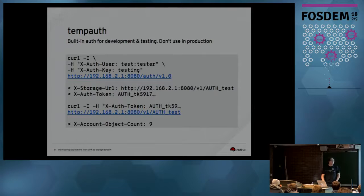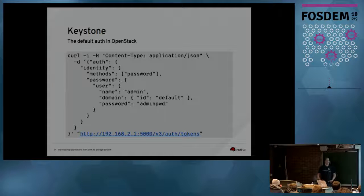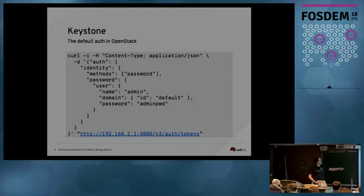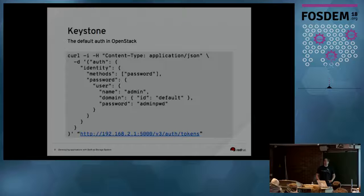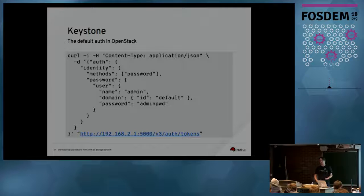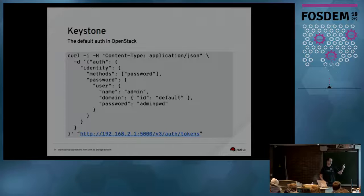When going into a production-like environment, in many cases you're using Keystone, which is the OpenStack identity project. It works similarly — instead of sending headers, you send a JSON blob with a password and username to the Keystone server. Keystone will return a token and a URL. You then need to do a second query to get the actual endpoint for Swift, because with Keystone you typically have multiple endpoints for multiple services — OpenStack Nova, Swift, Cinder, Glance, and so on — each with its own endpoint to query from Keystone.